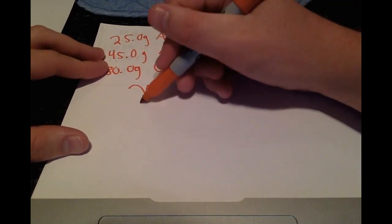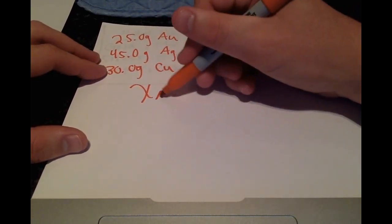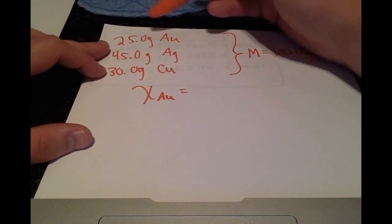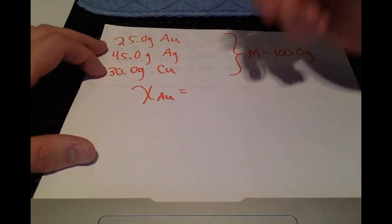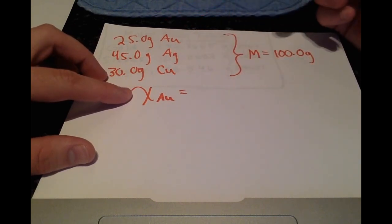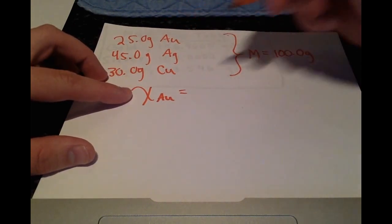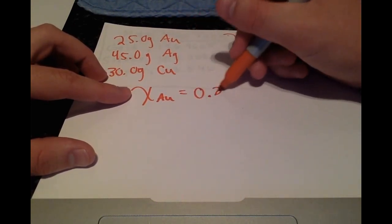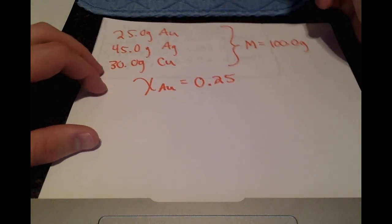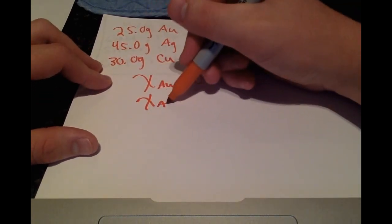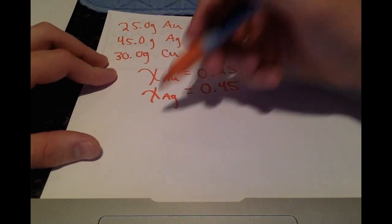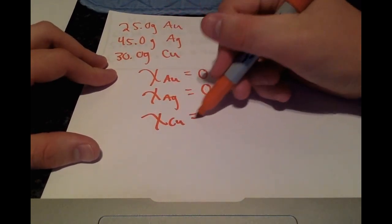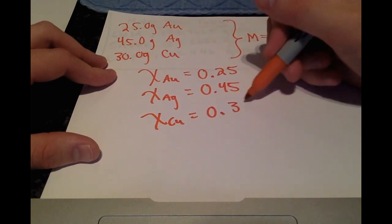So for each component, we're going to be taking the grams of that component divided by the total grams. So for the mass fraction of gold, that's just 25 over 100, or 0.25. And doing this for silver, we get 0.45. And for copper, we get 0.30.